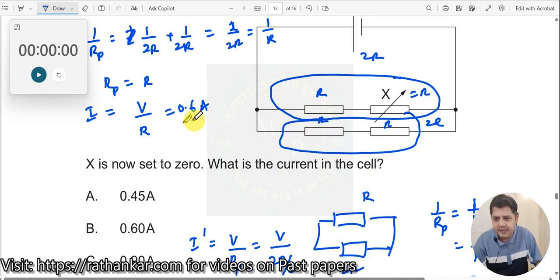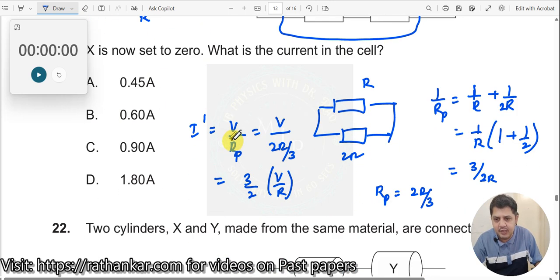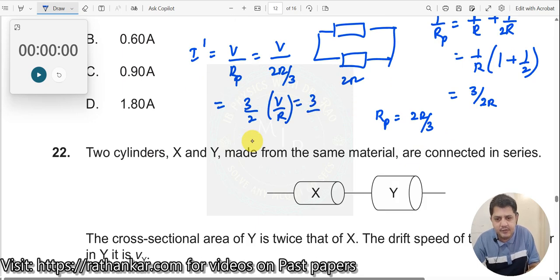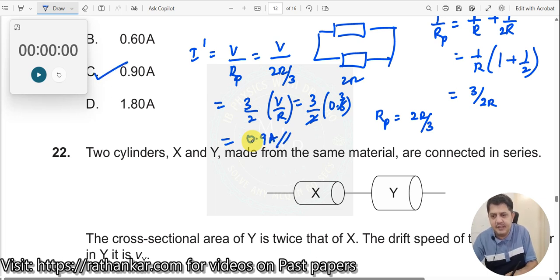Now what is V by R? V by R is 0.6 which we already found, the previous one. So therefore, I will just substitute this as 3 by 2 into 0.6 which gives out to be 3 into 0.3 should be 0.9 amperes. So the answer should be C.